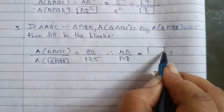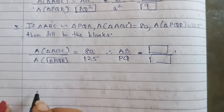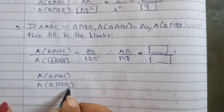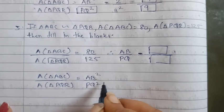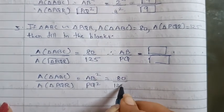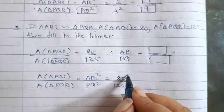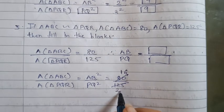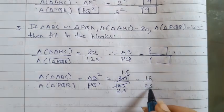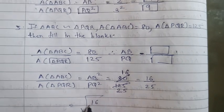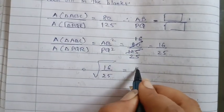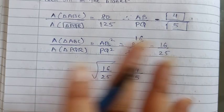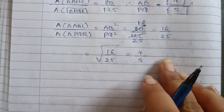So this is how to fill in the blanks. Area of triangle ABC upon area of triangle PQR is equal to AB square upon PQ square. Given that area of triangle ABC is 80 and area of triangle PQR is 125, we get 80 upon 125. Cutting by 25 gives 16 upon 25, so the square root of 16 upon 25 gives 4 upon 5. So the answer is 4 upon 5.